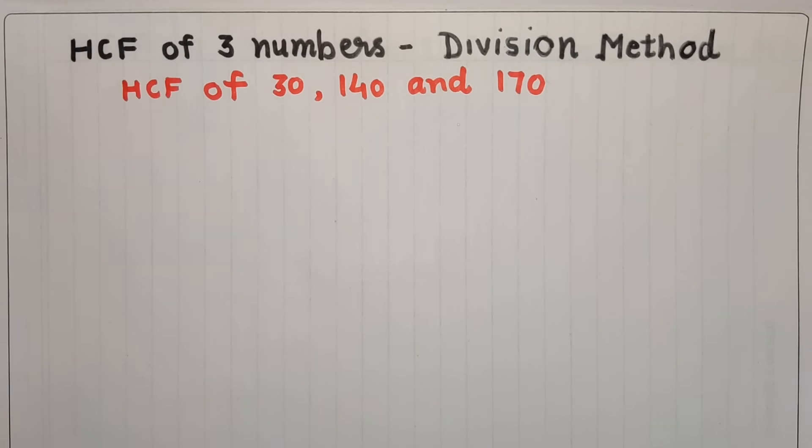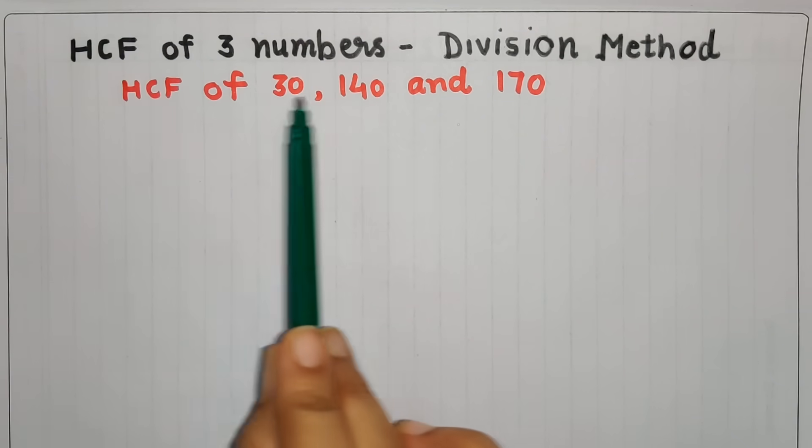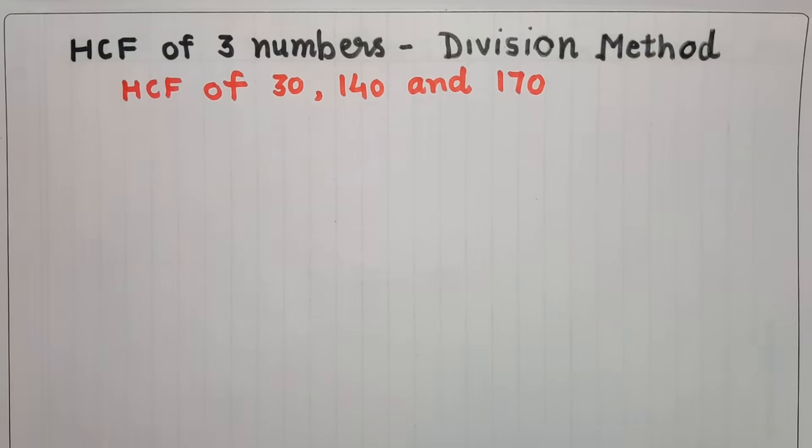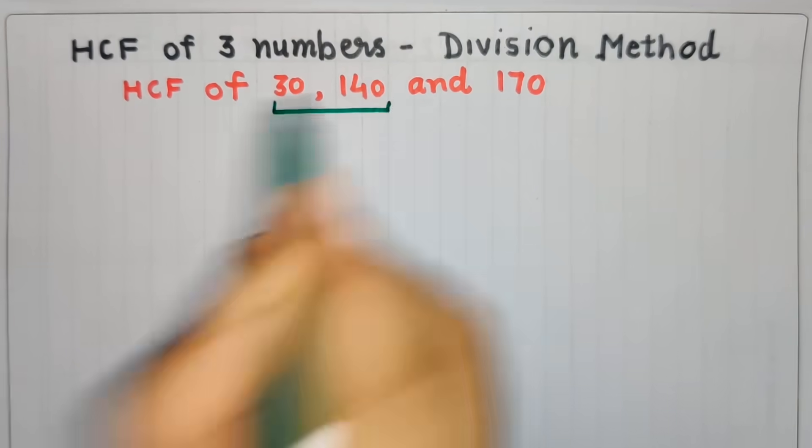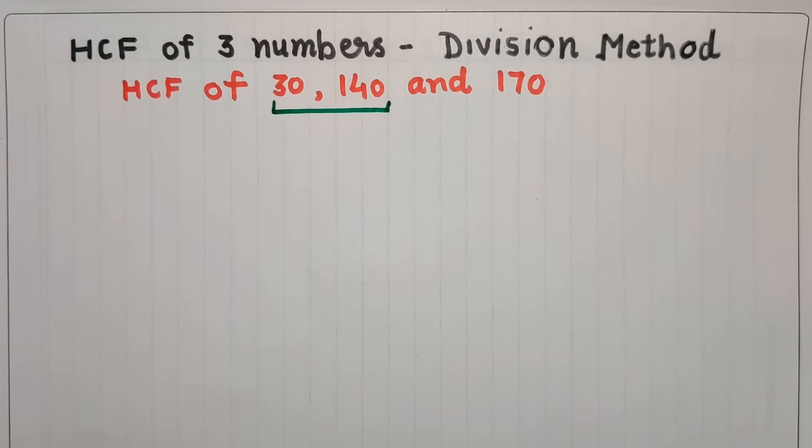we first see what are the two smaller numbers. Here you can see we have to find HCF of 30, 140, and 170. The smaller numbers are 30 and 140, so first we will take out HCF of 30